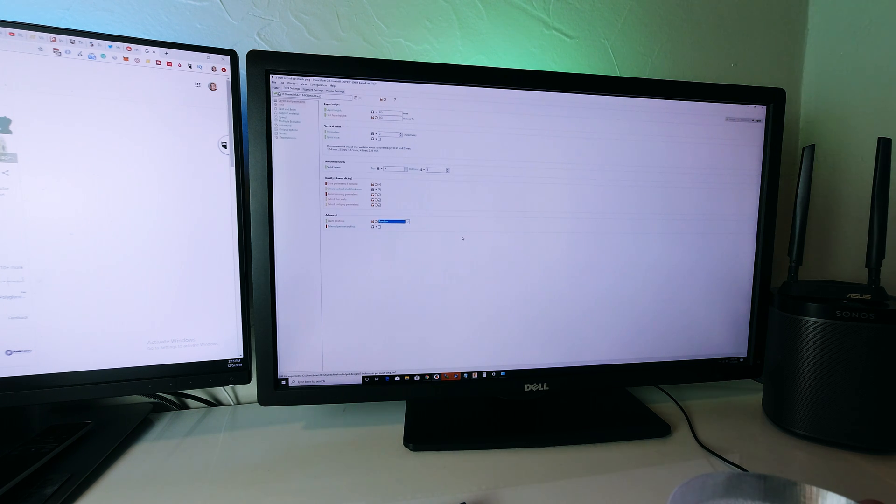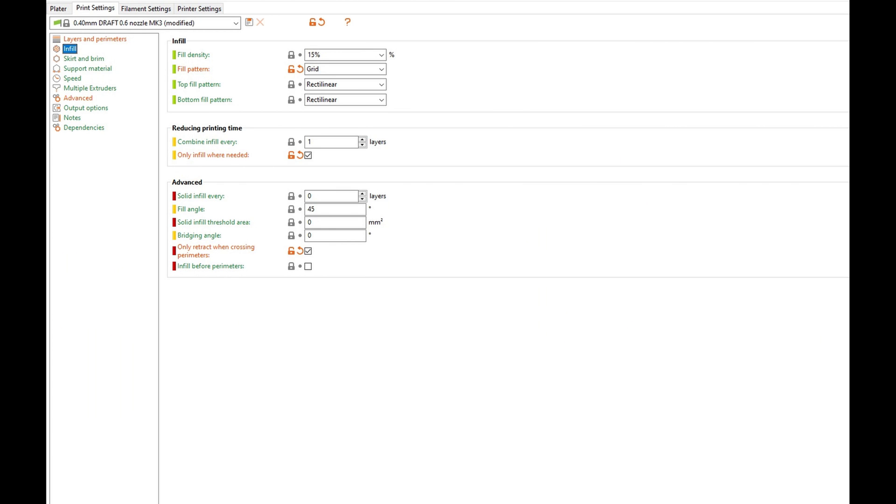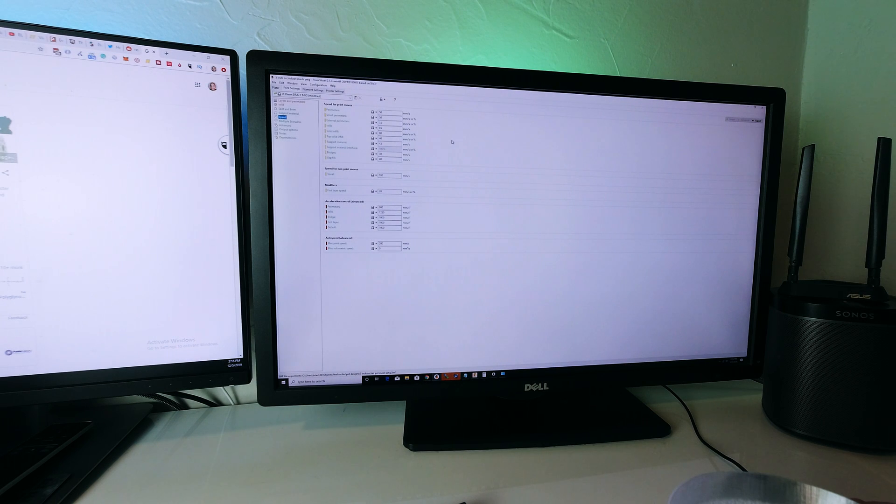For infill I selected infill only where needed, I'm using grid for the fill pattern. For speed, the first layer speed I dropped down to 20, although I think I might be able to bump that back up a little bit. The acceleration is still at a thousand millimeters per second, so that hasn't really changed. Given how perfect my first layer is, maybe I'll just stick with this, but I think I could bump this back up to like 25, 30, maybe even higher.